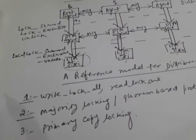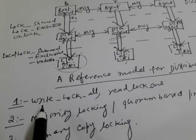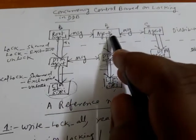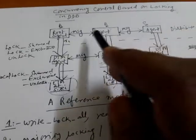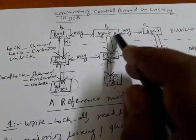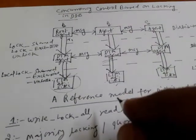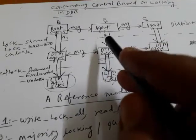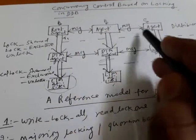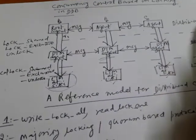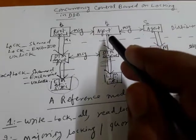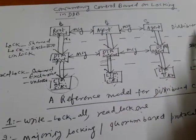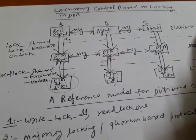You can handle this situation using three protocols. The first protocol is 'Write lock all, Read lock one.' If I want to perform a write operation on B and C, and a read operation on D, the rule says: wherever I want to perform a write, I lock it in exclusive mode — meaning no other transaction can access that data item; they must wait.